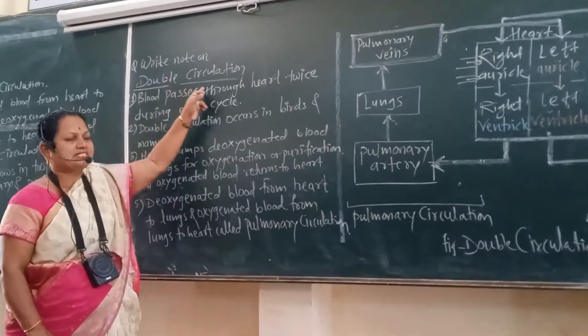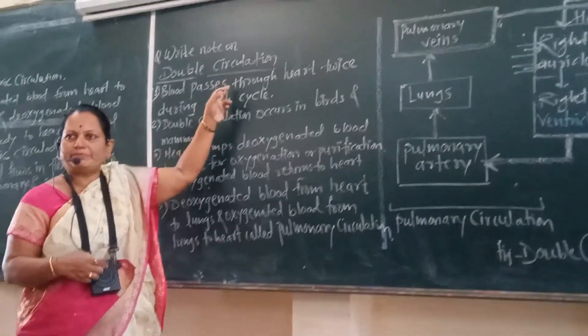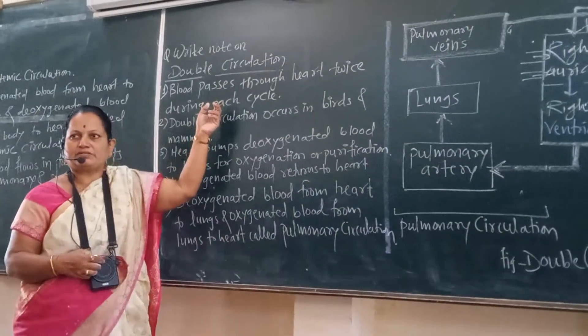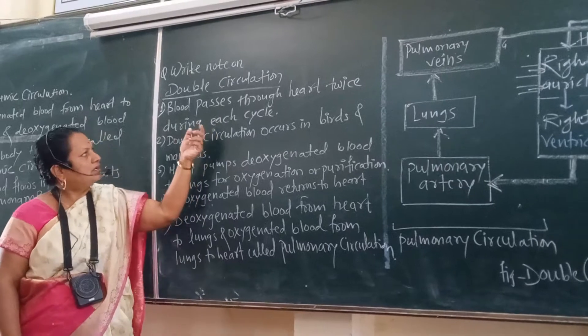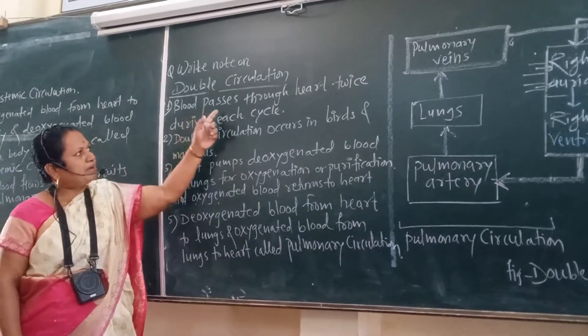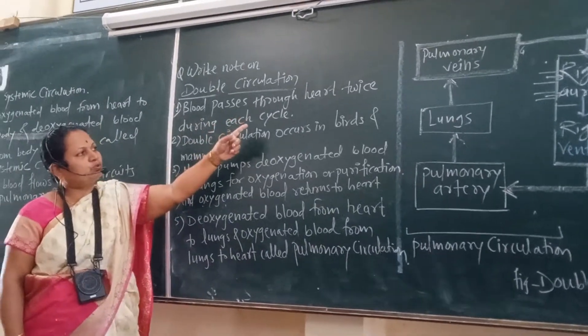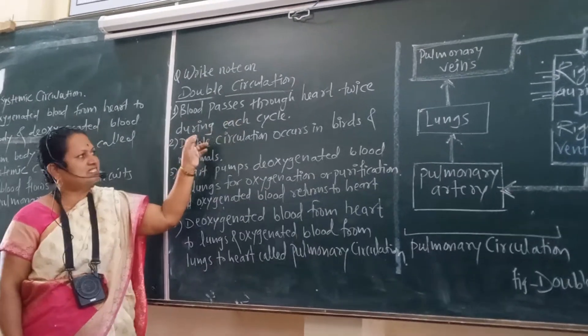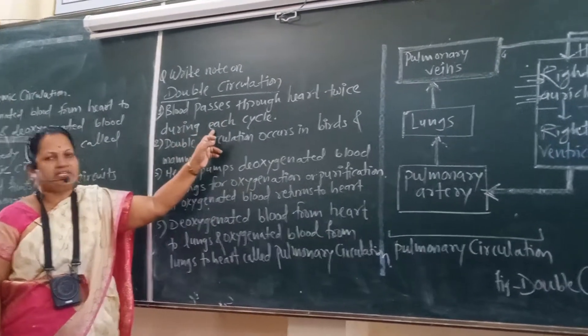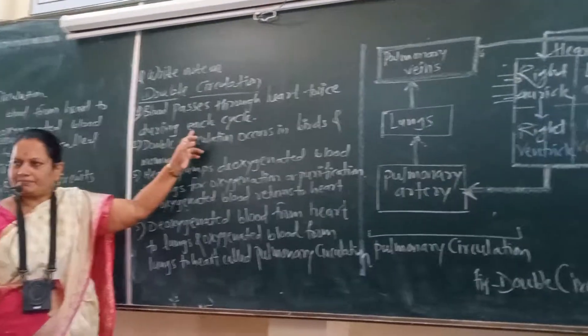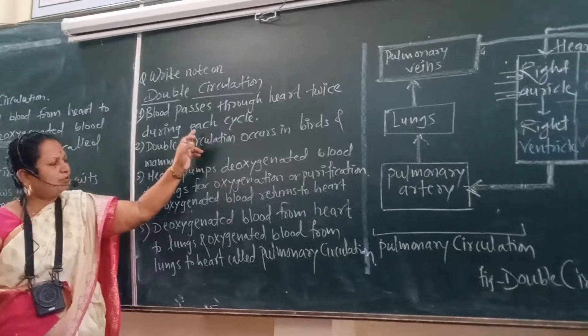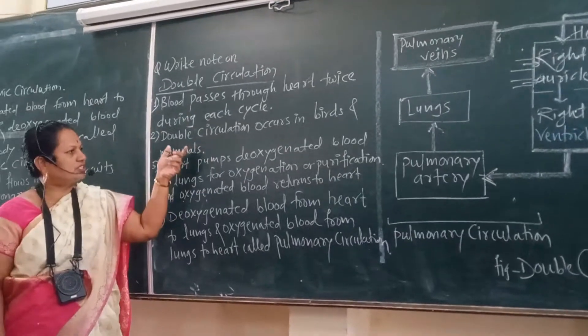Double circulation. What is double circulation? Blood passes through the heart twice during each cycle. Therefore, it is called double circulation.